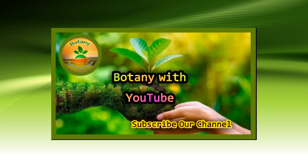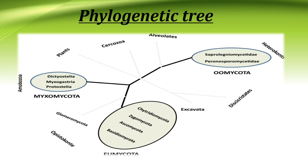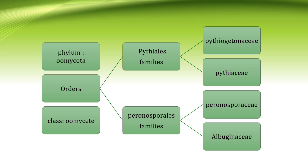If you are new to our channel, please subscribe. Firstly, classification: there are some orders, families, species, and genera of Oomycetes. The phylogenetic tree can be observed here. Myxomycota, Oomycota, and Oomycota — you can observe the phylum Oomycota, their orders and their classes in this diagram.